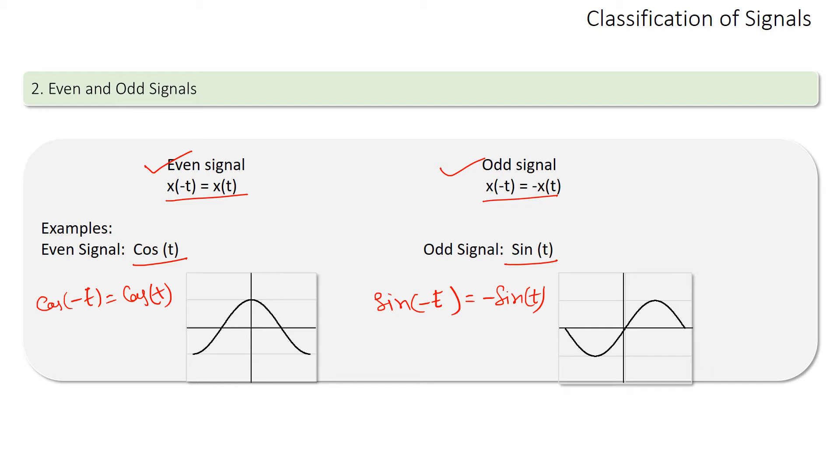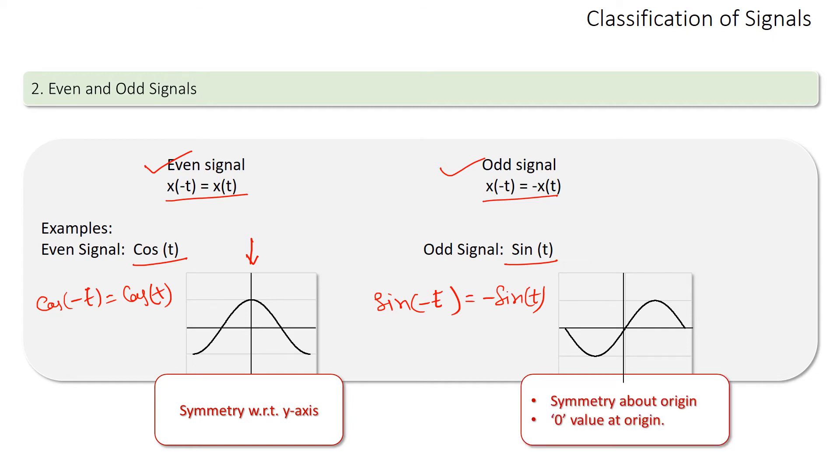Here we can observe some important points about even and odd signals. An even signal always has symmetry about the y-axis, meaning it is a mirror image with respect to the y-axis. And an odd signal always has symmetry about the origin and must have zero value at the origin.